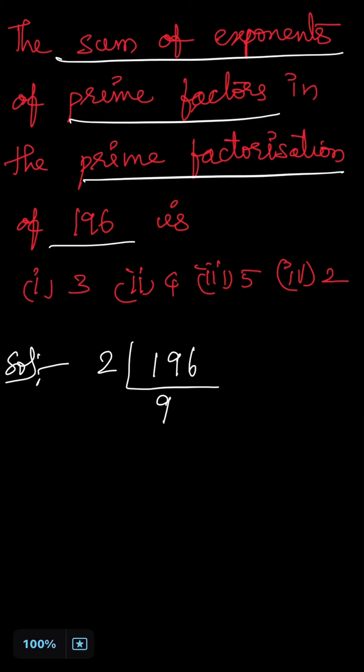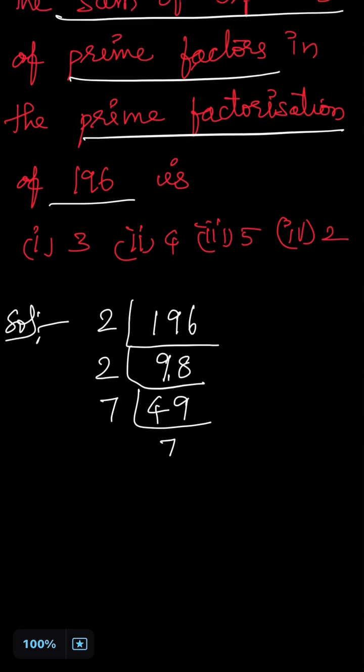2 9s are 18. 2 8s are 16. 2 4s are 8. 1 is the remainder. 2 9s are 18. 7 7s are 49.